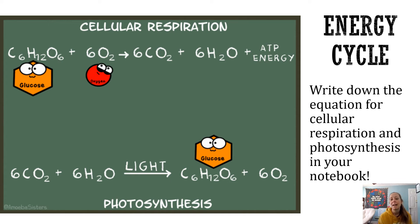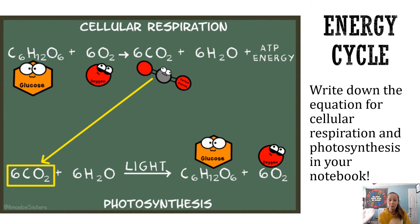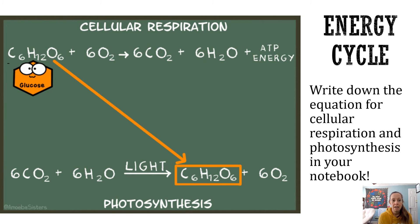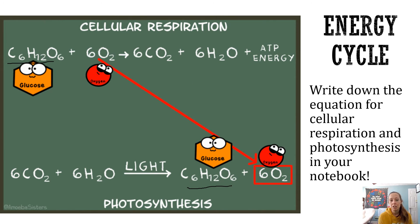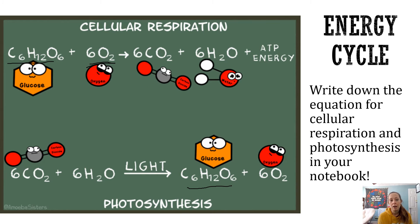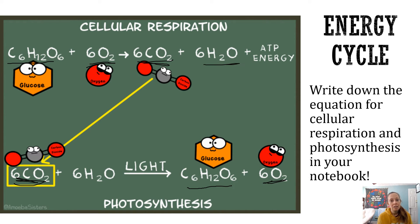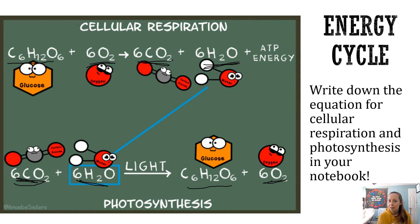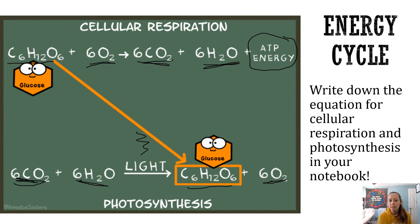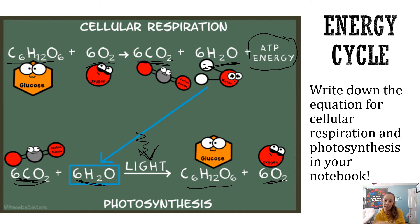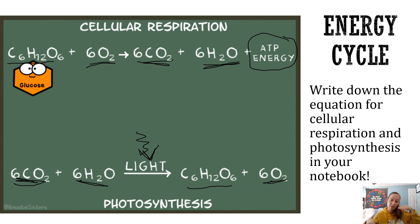Write down the equations for cellular respiration and photosynthesis in your notebooks, and you can add arrows to show how everything is used. Glucose (C6H12O6) comes out of photosynthesis and goes into cellular respiration. Oxygen (6O2) comes out of photosynthesis and goes into cellular respiration. The products of cellular respiration — carbon dioxide and water — are then picked up and used by plants in photosynthesis. The only differences are that cellular respiration gives you ATP, and photosynthesis uses sunlight. The reactants of cellular respiration are the products of photosynthesis, and vice versa.